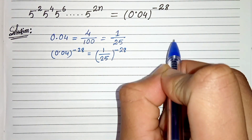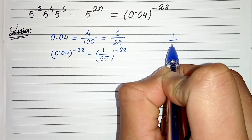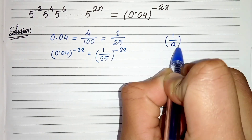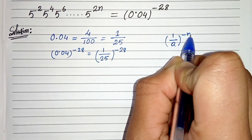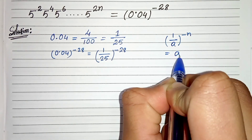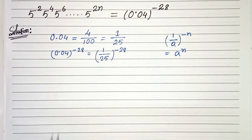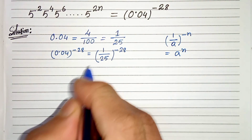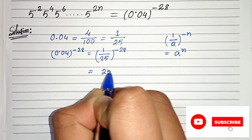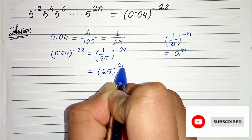And we know that 1 by a whole to the power minus n can be written as a to the power n. So from this we can write 25 whole to the power 28.